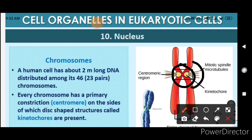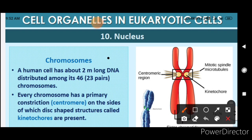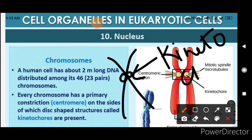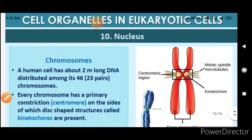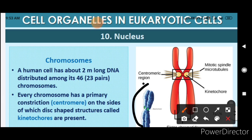The primary constriction of the chromosome is the centromere. On the sides of the centromere, disc-shaped structures are present called kinetochores. The chromosome is an X-shaped structure where the constriction is the centromere and the disc-like structures at that point are the kinetochores. During cell division, the mitotic spindle fibers attach to the centromere through the kinetochore.